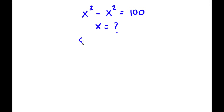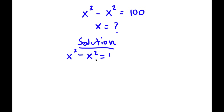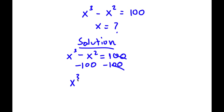For my solution, first start with x to the power of 3 minus x squared is equal to 100. What I'm going to do is subtract 100 on both sides, so these two will cancel out on my right-hand side. I'll be left with x to the power of 3 minus x squared minus 100 is equal to 0.